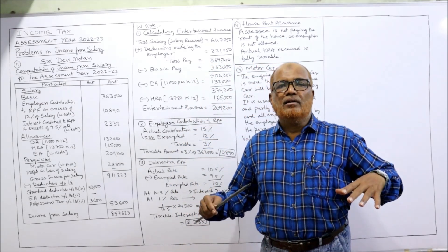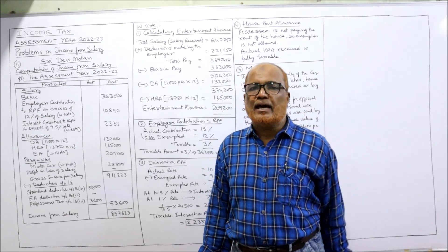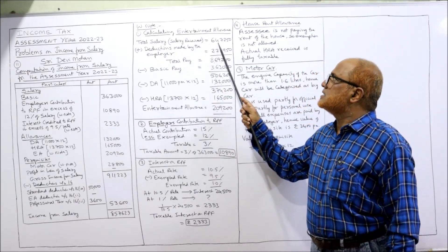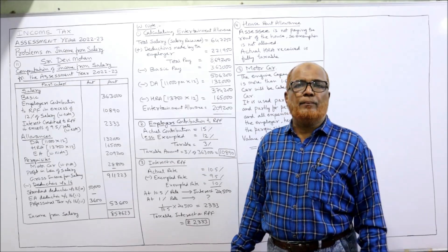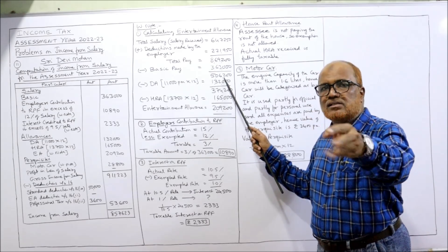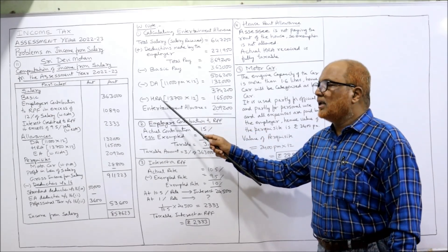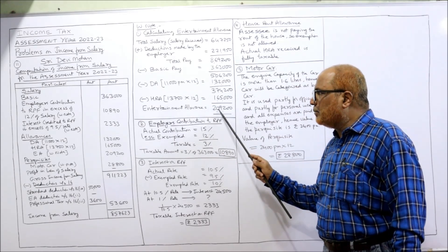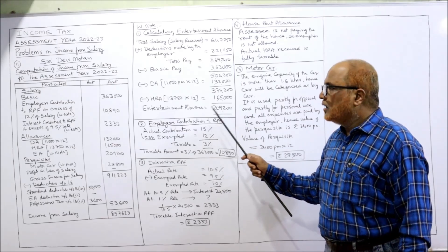The assessee is living in his father's house for which no rent is paid. Since he is not paying rent, no HRA exemption under Section 10(13A) is allowed — the actual HRA received is fully taxable. Coming back to the calculation: from the remaining five lakh six thousand two hundred, we deduct DA (eleven thousand per month × 12 = one lakh thirty-two thousand) and HRA (thirteen thousand seven fifty × 12 = one lakh sixty-five thousand). The remaining balance is the entertainment allowance, which we have thus calculated.